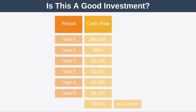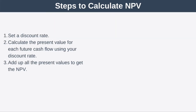Suppose you have a project under consideration that produces these cash flows. As you can see, this project requires an initial $5,000 investment and then produces $600, $1,100, $1,500, $2,000, and $2,300 over five years. To calculate the NPV of this project, the steps you have to take are: first, set a discount rate; second, calculate the present value for each future cash flow using your discount rate; and finally, add up all the present values to get the NPV.